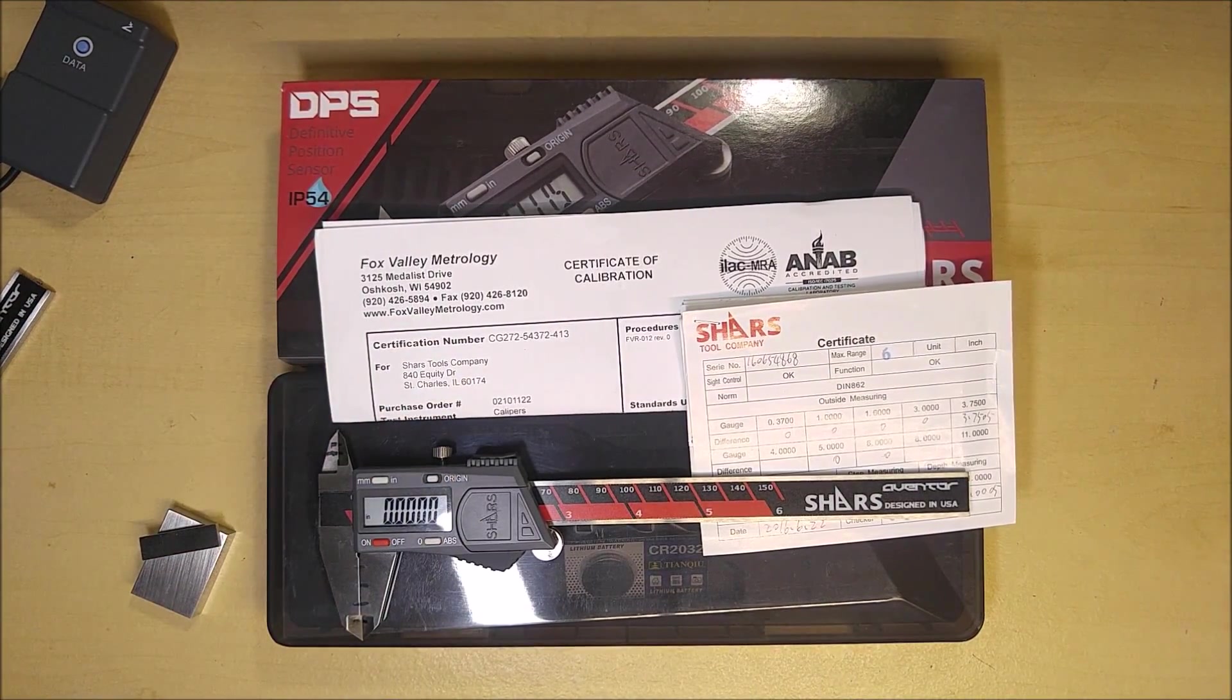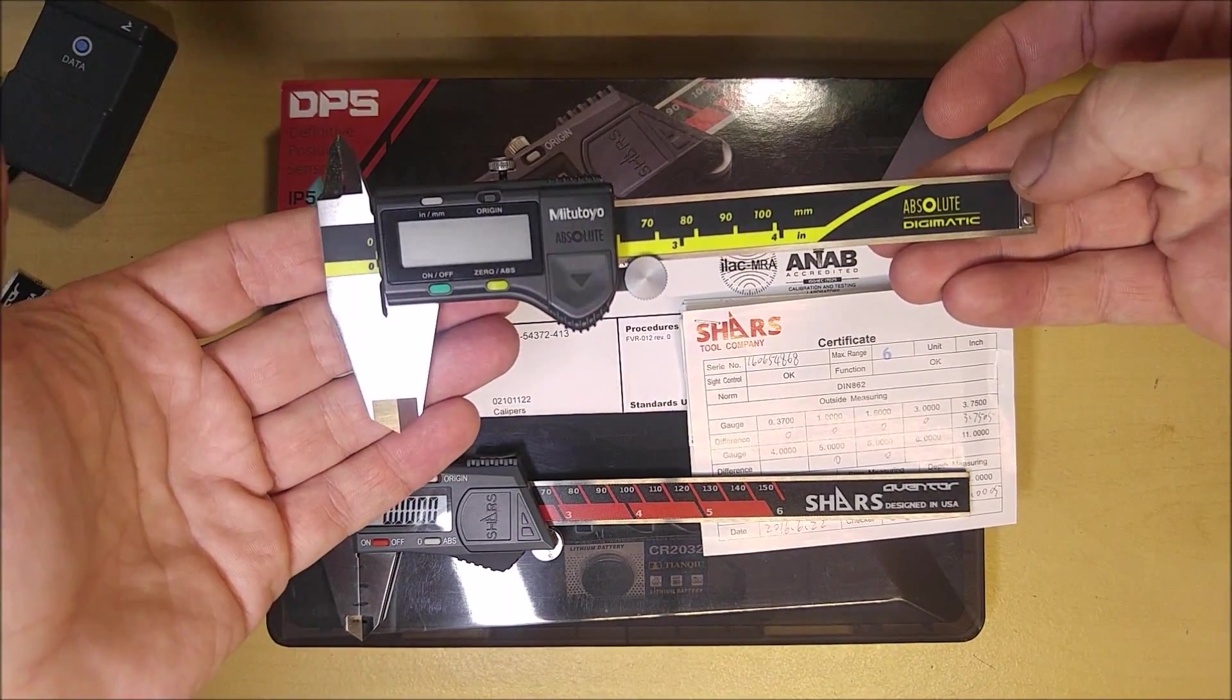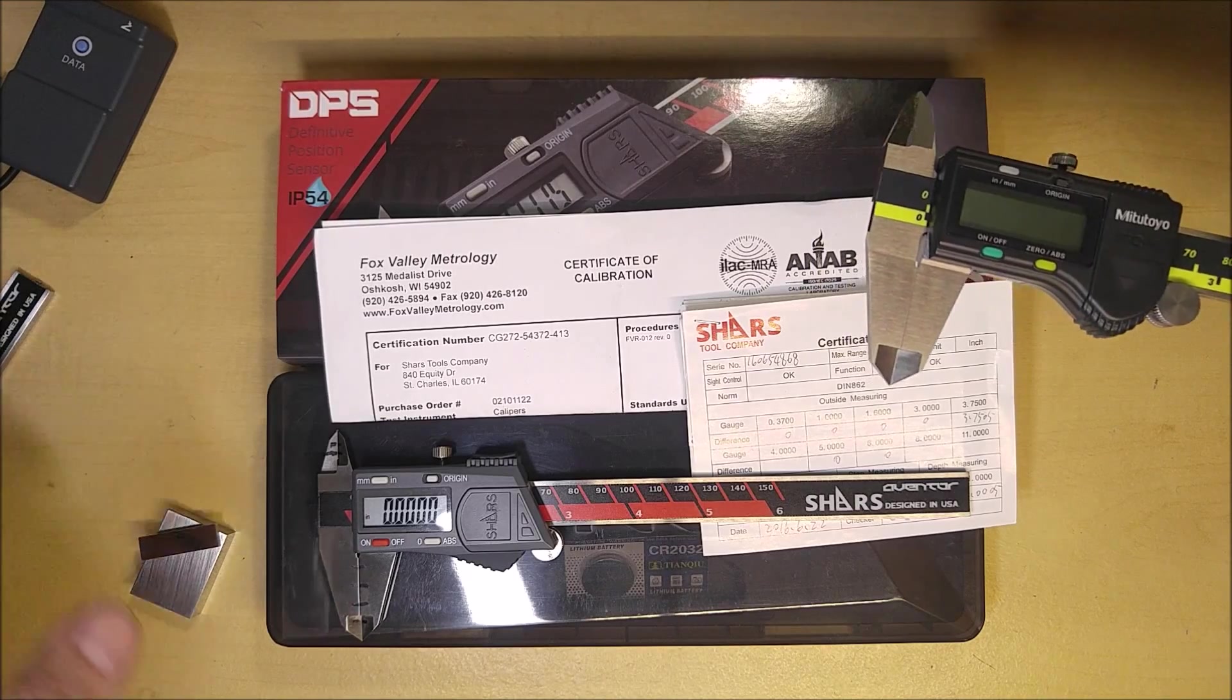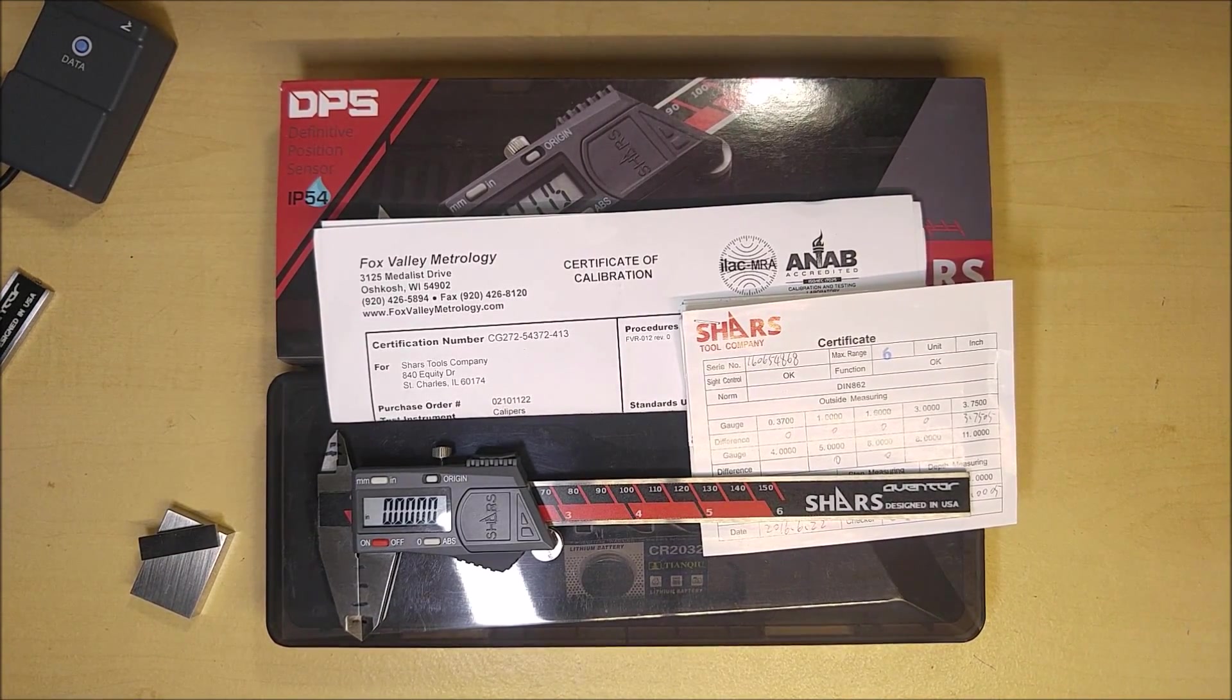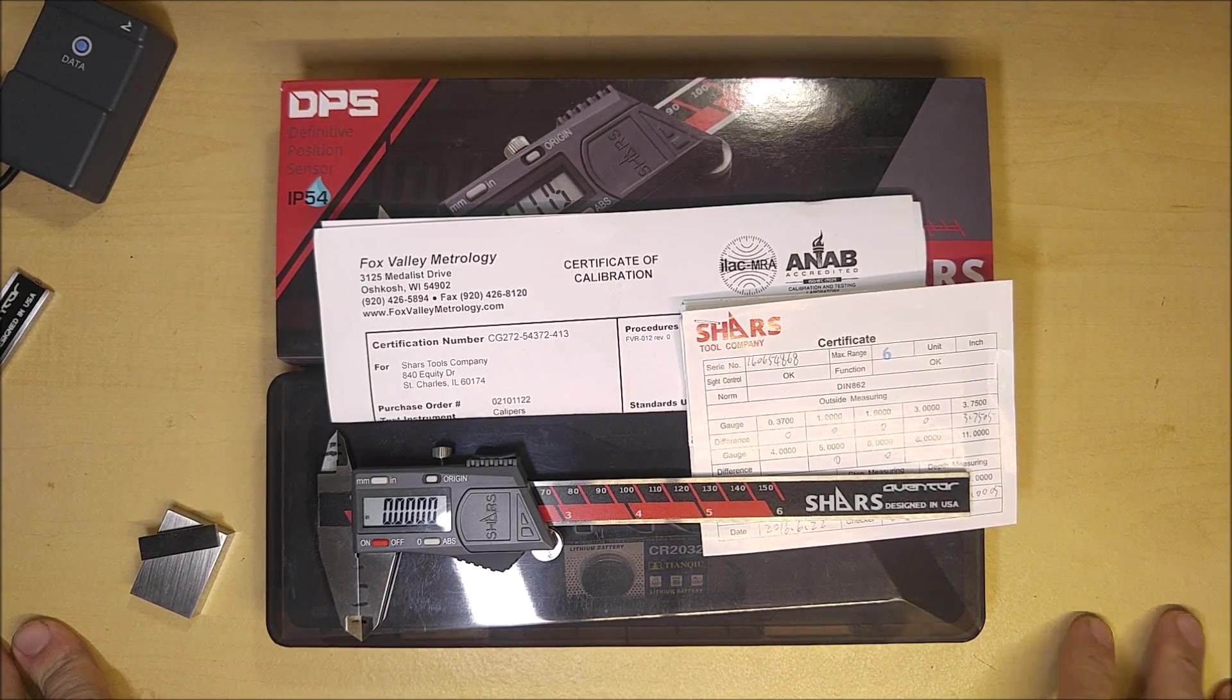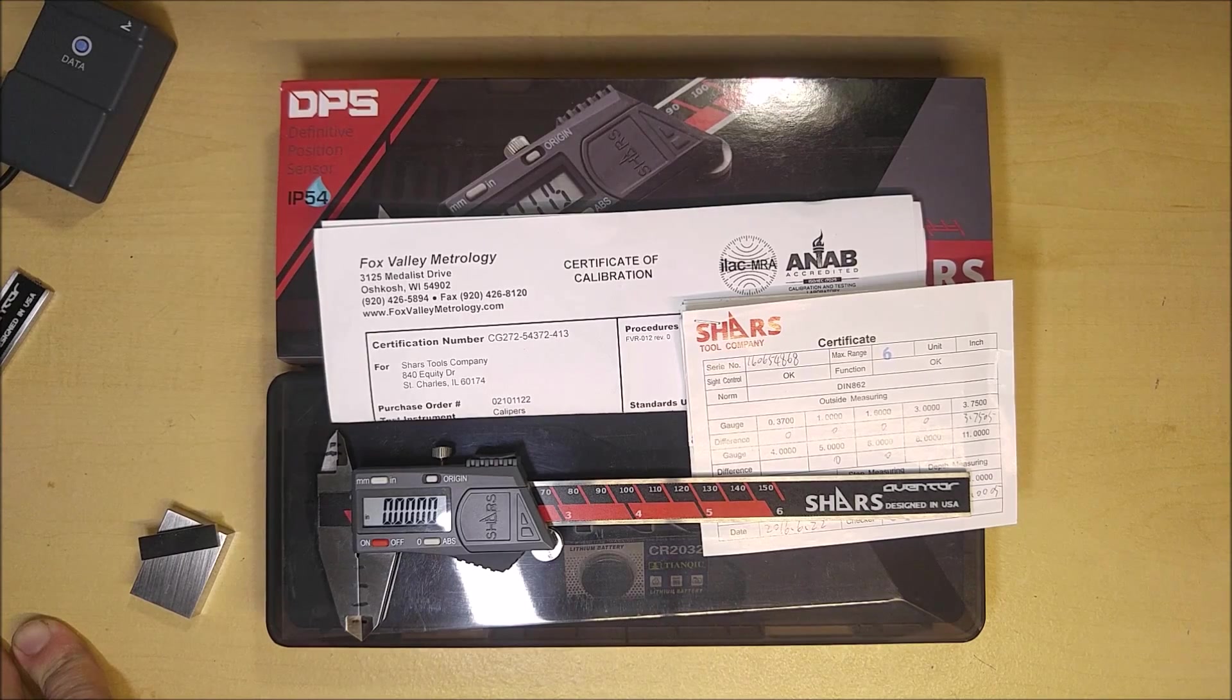You may remember the video I did about two years ago where I compared seven different digital calipers to the Mitutoyo Digimatic series to see if you can get a really good quality digital caliper for less than the cost of a Mitutoyo, a Starrett, or a Fowler. And what I found in that video is that you can indeed get a really good digital caliper for half or less the cost of a Mitutoyo.